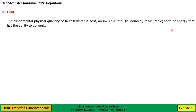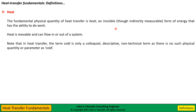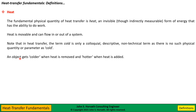Heat is invisible, though indirectly measurable. Heat is a form of energy and therefore has the ability to do work. Heat is movable and can flow in or out of a system. Note that in the science of heat transfer, the term cold is only a colloquial, descriptive, non-technical term — there is no such physical quantity or parameter as cold. An object gets colder when heat is removed, and gets hotter when heat is added. Heat is the only physical quantity we're talking about here. The corresponding physical quantity in groundwater seepage is the water itself.